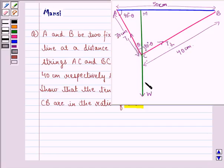They are supporting the weight W at the point C. We have to show that the tensions T1 and T2 in the strings CA and CB are in the ratio 4 is to 3. Let us start with the solution.